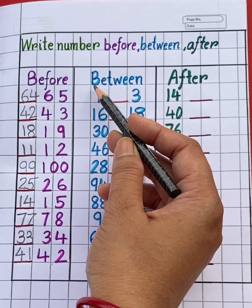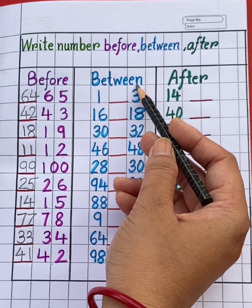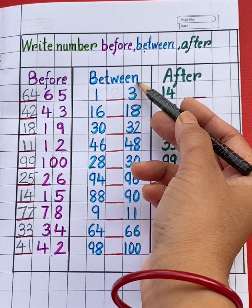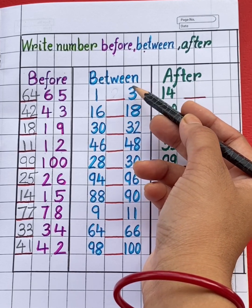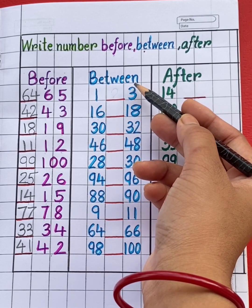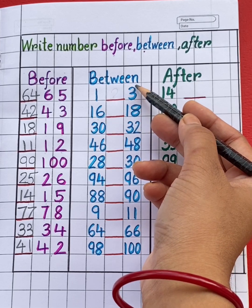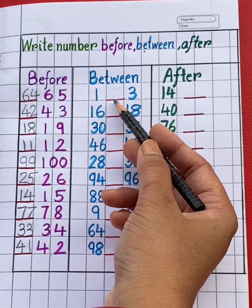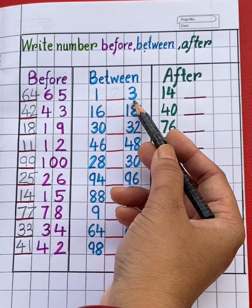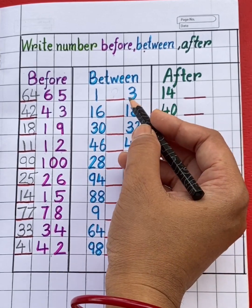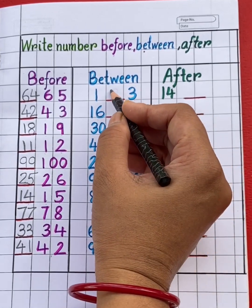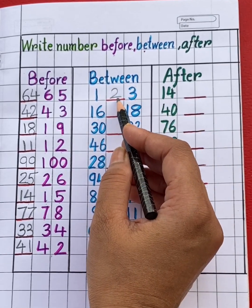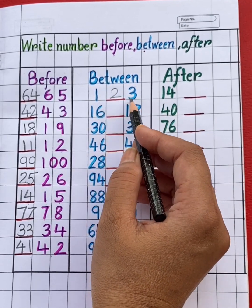Now let's learn about between numbers. Between numbers are those numbers which come in the middle of two numbers. Which number will come in between 1 and 3? Yes, number 2 will come in between 1 and 3.